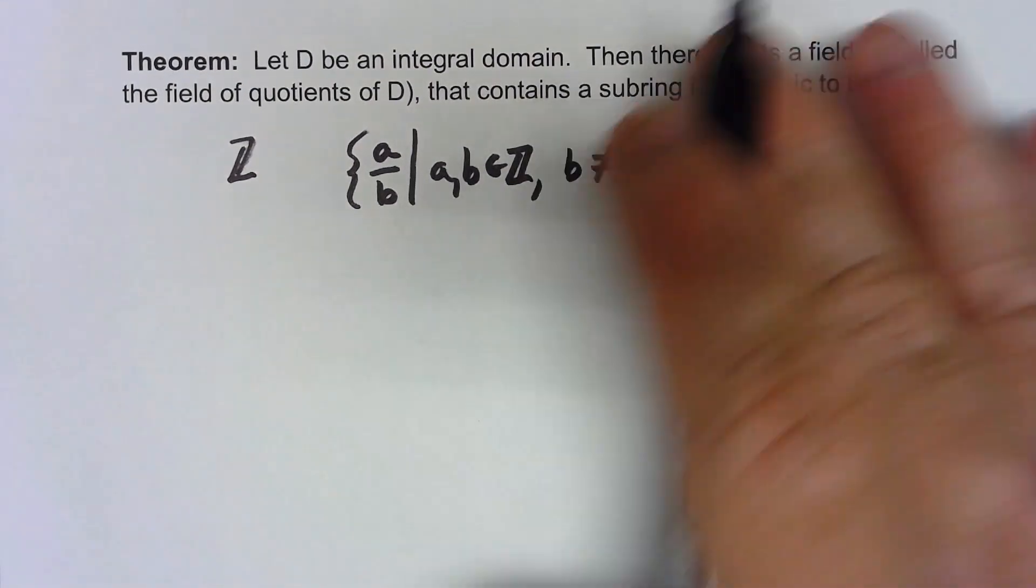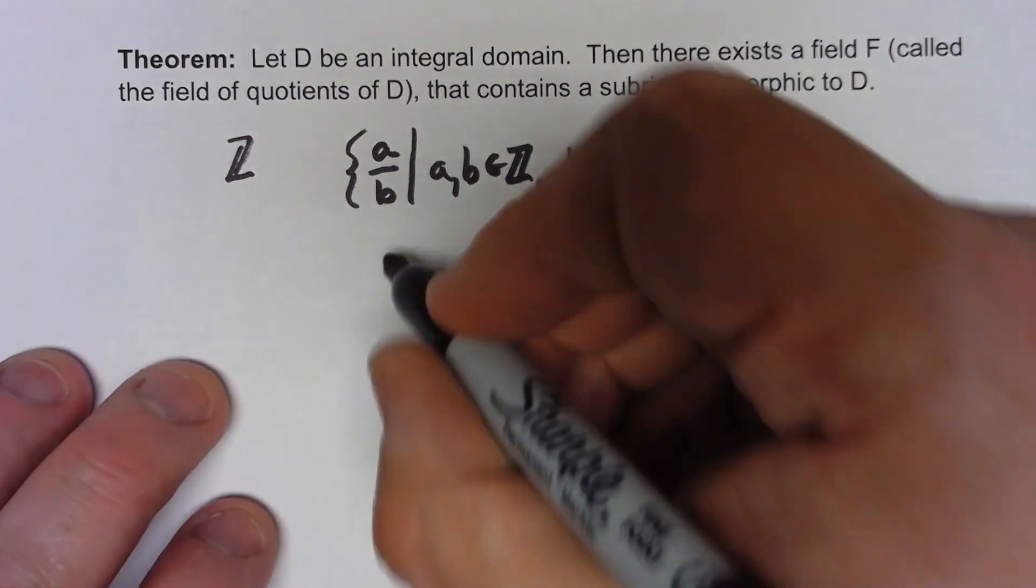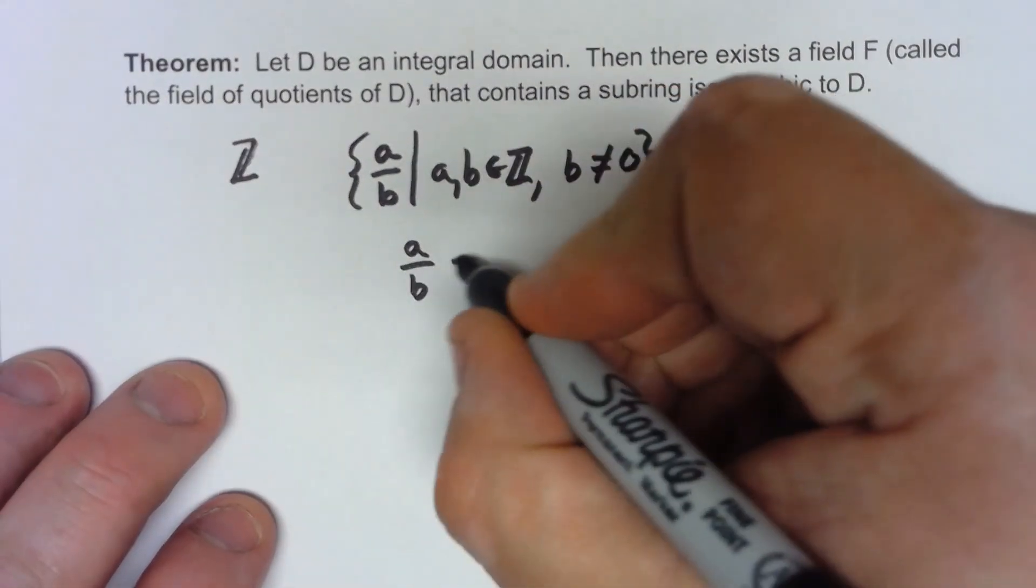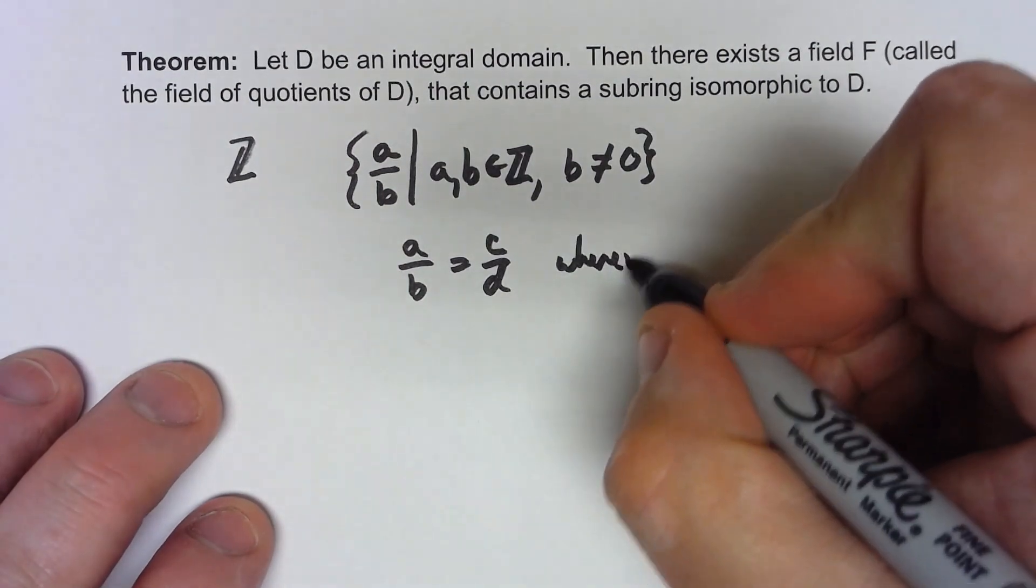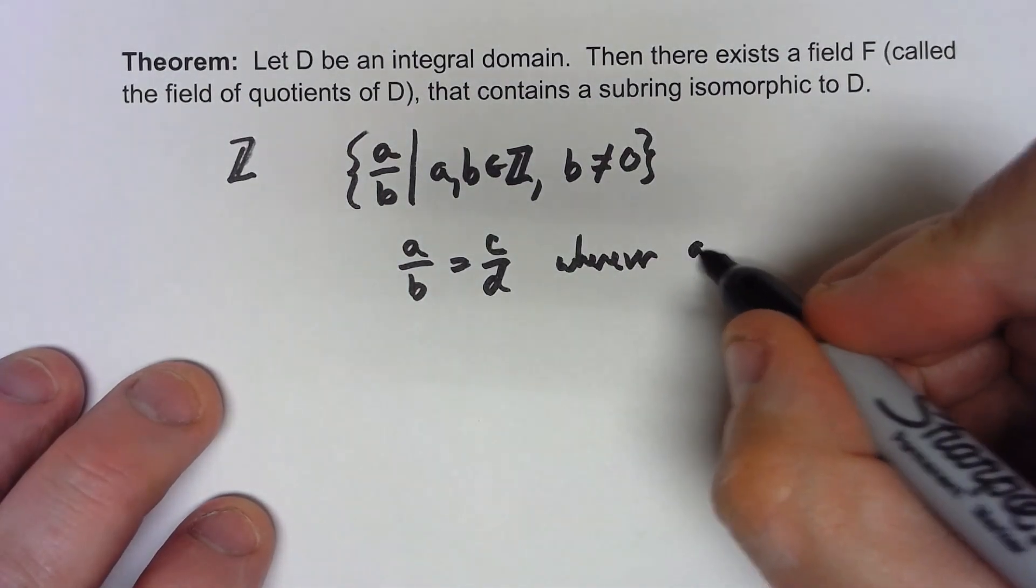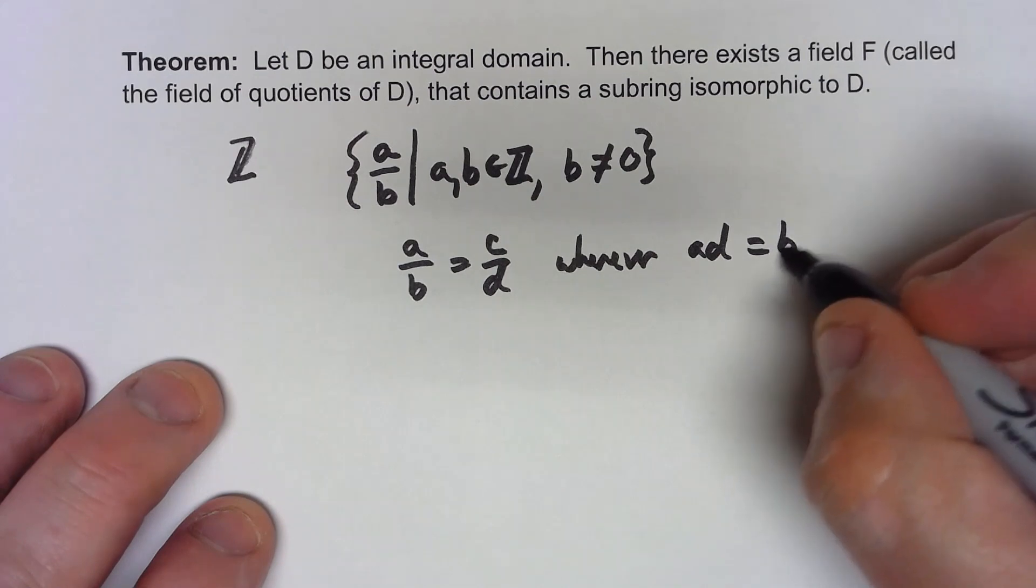And then we created some equivalence classes. We said that a over b equals c over d whenever a times d equals b times c.